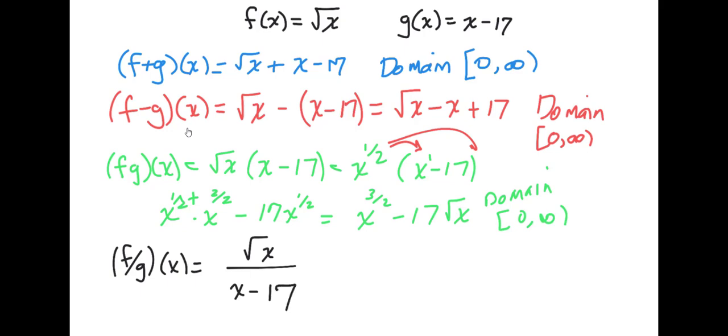We just have to be sure that, notice our domain up here needs to be 0 or above, and down here can't be 17. So how we would write that for our domain would be we'd start at 0, go all the way up to 17, but do not touch 17, jump to the other side of 17, and then can be anything above that number.